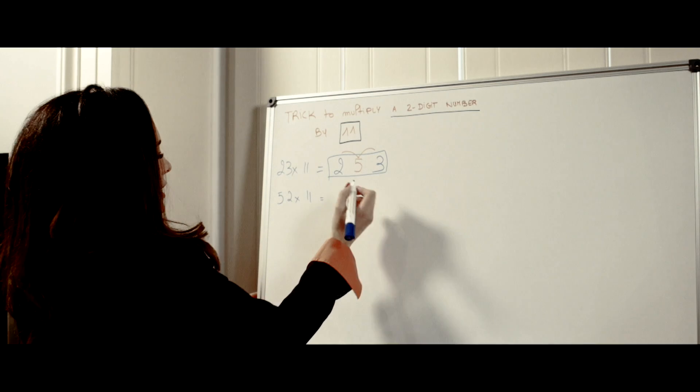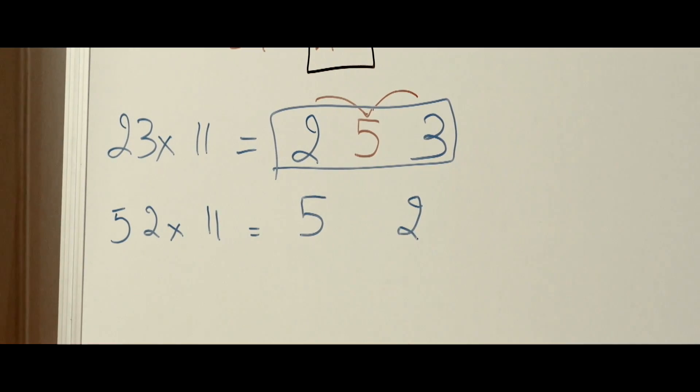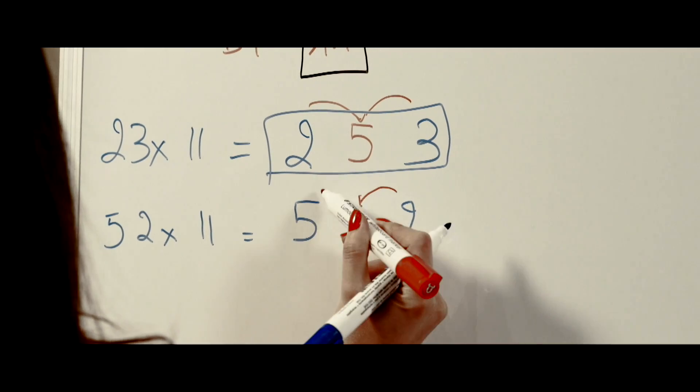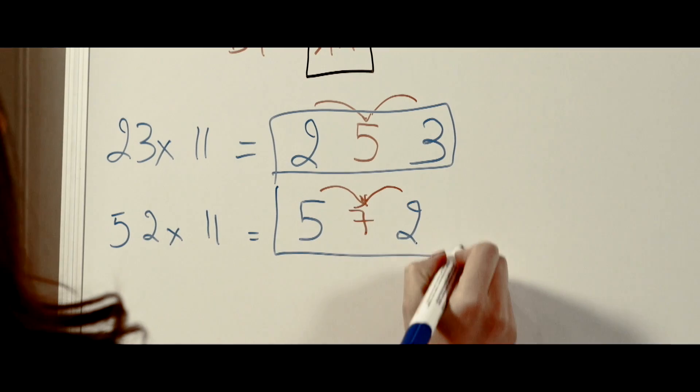So again we do the same trick. You put 5, you put the 2. The sum of the two is 7. So the answer is 572.